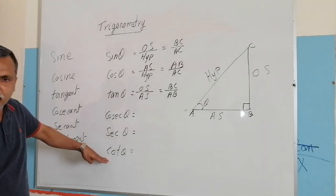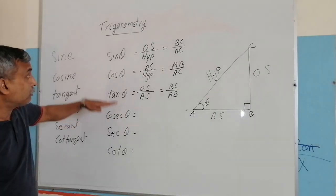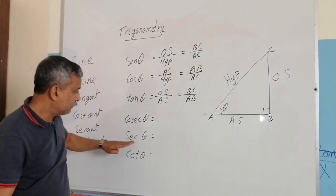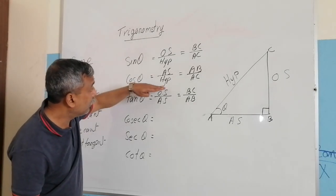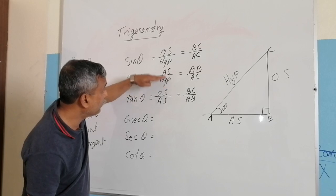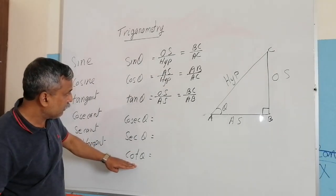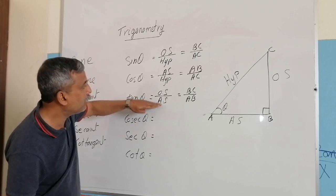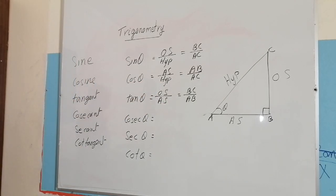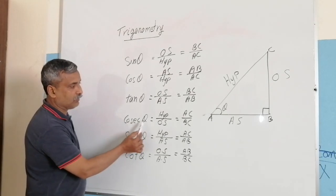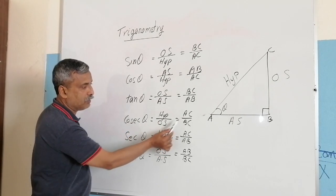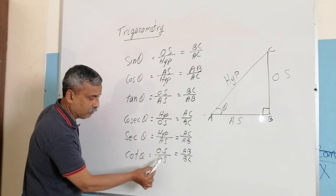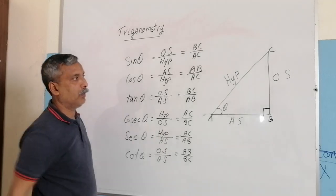The definition of cosecant, secant, and cotangent is straightforward because they are reciprocals. Cosecant theta is the reciprocal of sine theta, which is hypotenuse by opposite side, i.e., AC by BC. Sec theta is the reciprocal of cos theta, which is hypotenuse by adjacent side, i.e., AC by AB. Cot theta is the reciprocal of tan theta, which is adjacent side by opposite side, i.e., AB by BC.